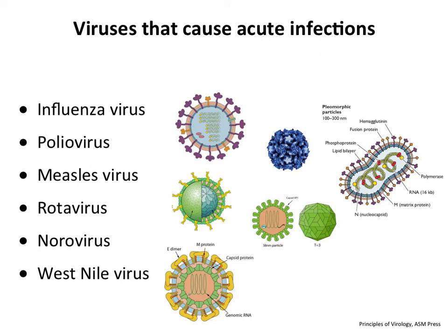Here are the viruses we'll go through today — chosen because they infect in different ways. Influenza and measles are both respiratory-acquired, but flu causes disease in the lung whereas measles spreads. Polio, rotavirus, and norovirus are enteric viruses that infect your gut tract and do different things. And then West Nile virus, a mosquito-borne infection, which the others are not. Now you know what all these icons mean — you understand the structure of these viruses as well.